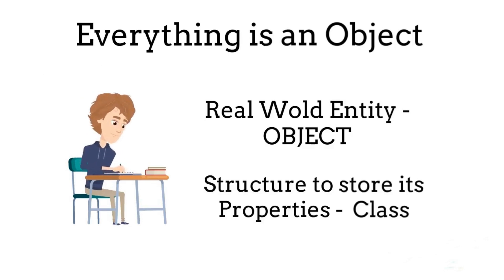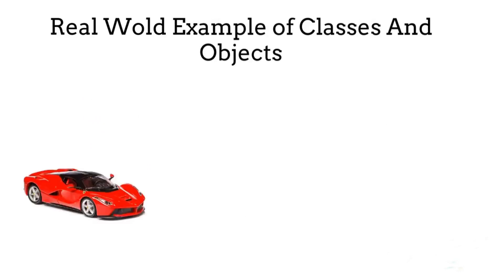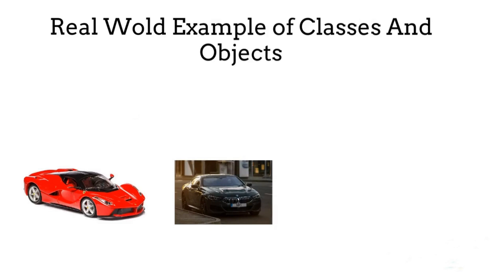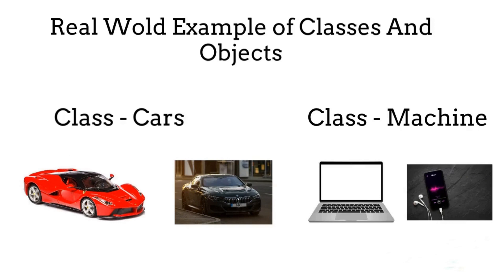In OOP everything is an object — every real world entity is called an object and its structure is called a class. If you look around yourself, everything is an object. For example, Ferrari and BMW are objects of a class called Car. Laptops and mobiles are objects of a class called Machine.